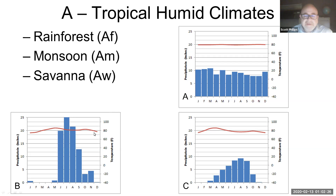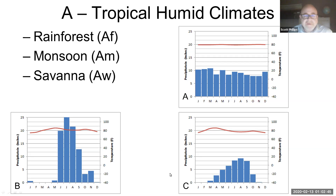These two down here have a little bit of variation, but not a lot. This is a monsoon climate, which has an extreme amount of rainfall in the summertime, and this is a savanna — it's the driest of the three. It has some seasonal differences in precipitation, but is not quite as wet as the others.